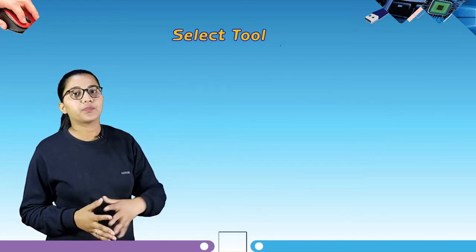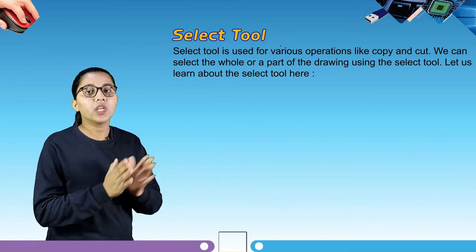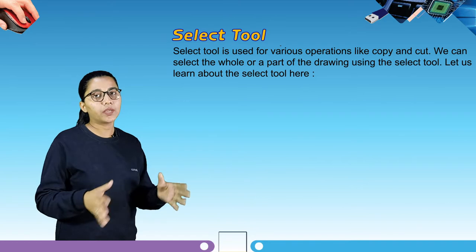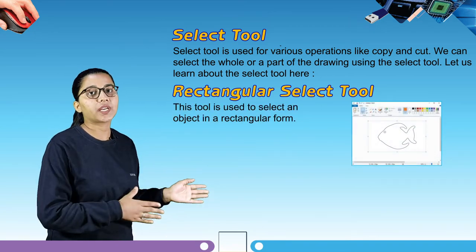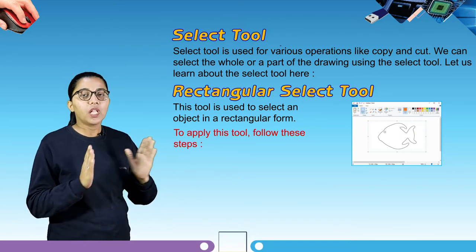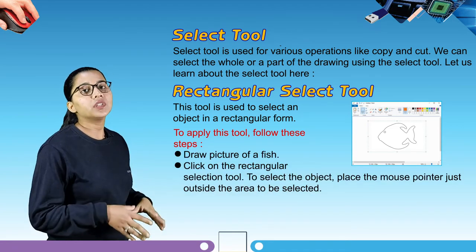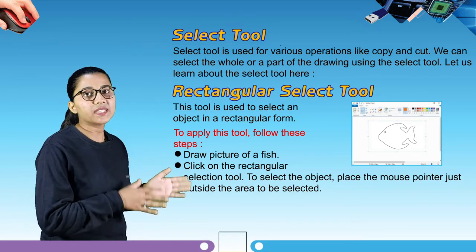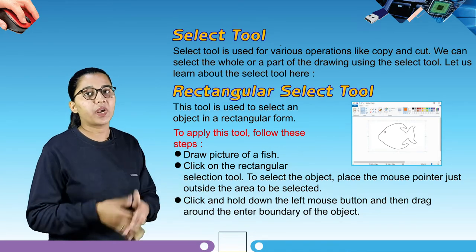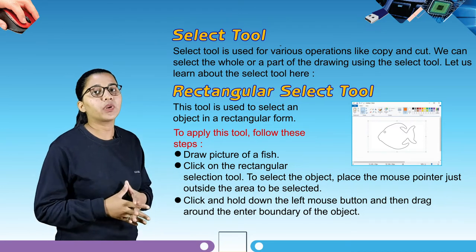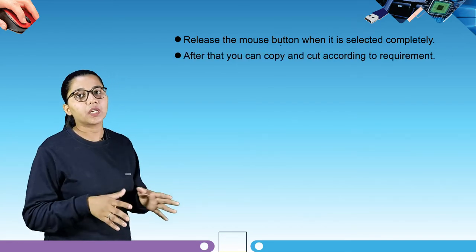Our next topic is the select tool, which is used for various operations like copy and cut. We can select the whole or a part of the drawing using the select tool. The rectangular select tool is used to select an object in a rectangular form. To apply this tool: draw or open a picture, click on the rectangular selection tool, place the mouse pointer just outside the area to be selected, click and hold down the left mouse button and drag around the entire boundary of the object, then release the mouse button when it is selected completely. After that, you can copy and cut according to requirement.